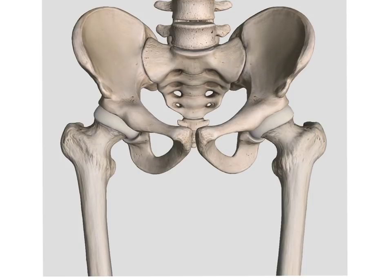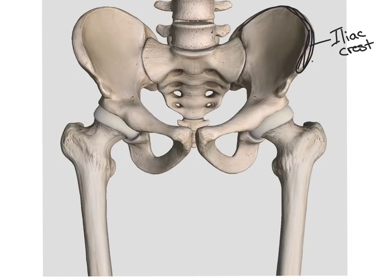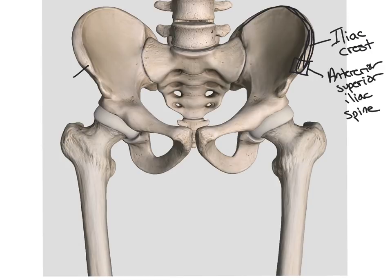We'll start with the prominences of the ilium. The top edge of the ilium on both sides is called the iliac crest. There is a small prominence on the front of the iliac crest, and those are called the anterior superior iliac spine. Below those we have the anterior inferior iliac spine.